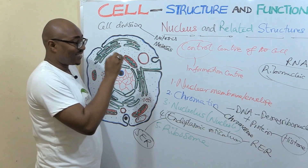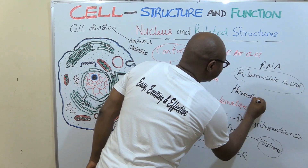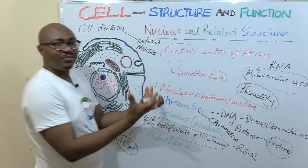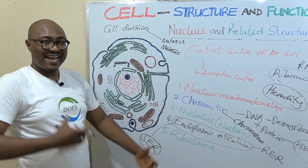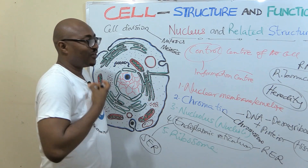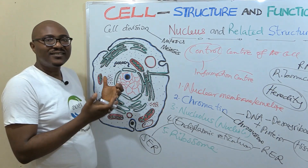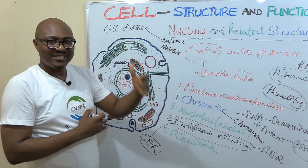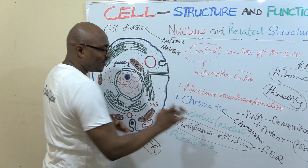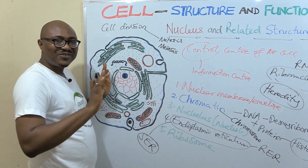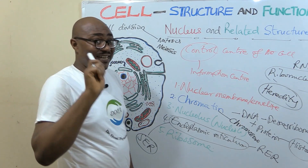So the nucleus is the center of heredity — inheritable characteristics. Those are the two major functions of the nucleus: heredity, and gene expression or protein synthesis that leads to the general day-to-day functioning of the cell. You can also see how it connects to the endoplasmic reticulum and the ribosome. That is what you need to know about the nucleus and its related structures. See you in the next video.